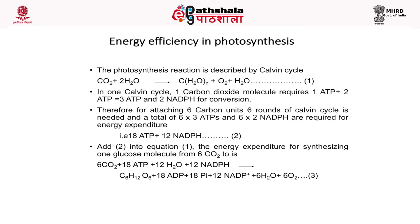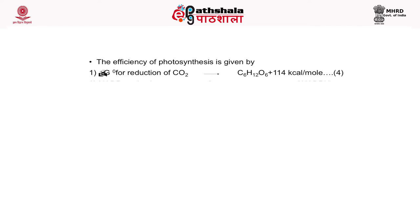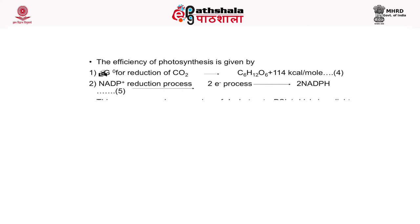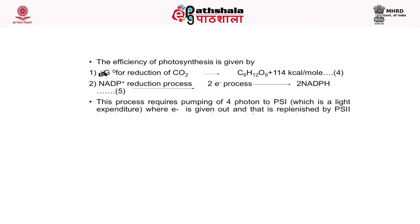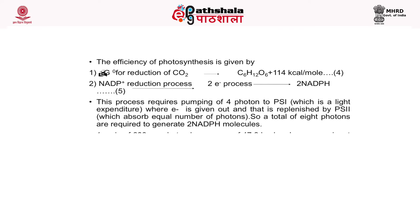The energy expenditure for synthesizing one glucose molecule from 6 CO2 is: 6 CO2 + 18 ATP + 12 H2O + 12 NADPH = C6H12O6 + 18 Pi + 12 NADP+ + 6 H2O + 6 O2. The efficiency of photosynthesis, given by ΔG0 for the reduction of CO2 to C6H12O6, is +114 kilocalories per mol.